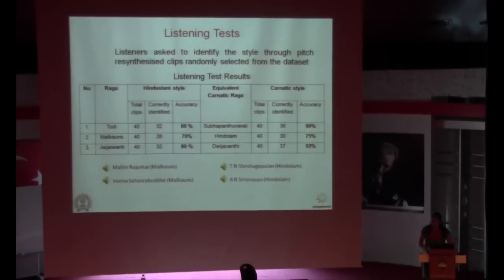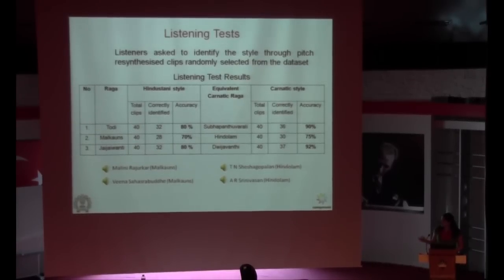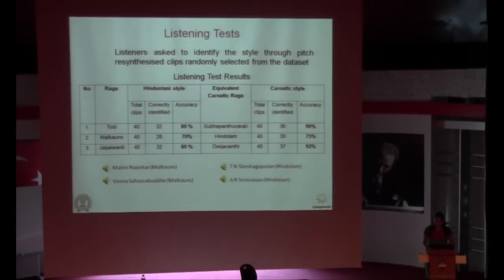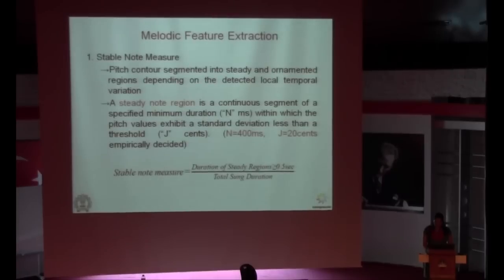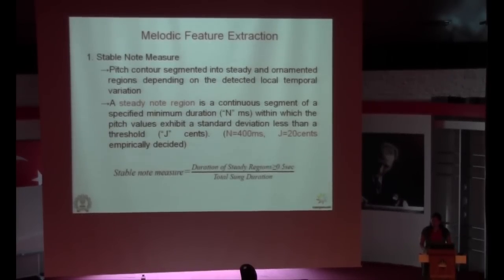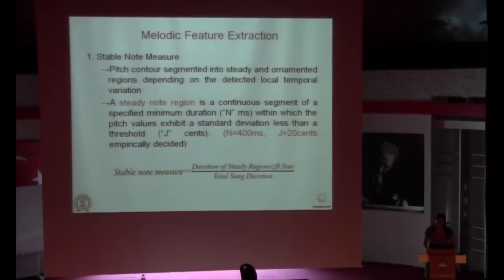The probable reason for lower accuracy with Malkauns might be that it is a pentatonic raga — even in Hindustani style, it shows quite a lot of usage of ornamentation. For classifying both the styles, we are using two measures: one is the stable note measure, and the other is the measure of oscillatory gamak.